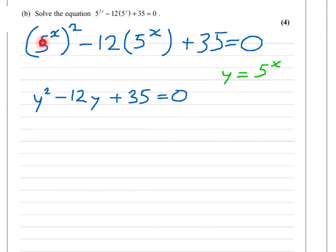And then you rewrite your equation, so this becomes y^2 minus 12y plus 35 is equal to 0. So all I've done there, instead of writing 5^x, I've written y for these here. And that's a quadratic you should be able to handle now. So this actually simplifies in terms of it factorizes.